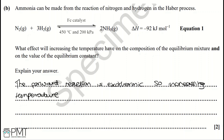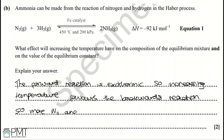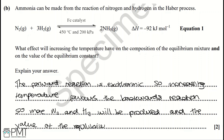If ΔH were positive it would be endothermic, but it's negative so it's exothermic. That means if we increase the temperature, the reaction will favour the backwards (endothermic) direction, producing more N₂ and H₂. This means the value of the equilibrium constant will decrease. Both parts of this question are answered in one sentence, so it doesn't require a lot of writing to get both marks.